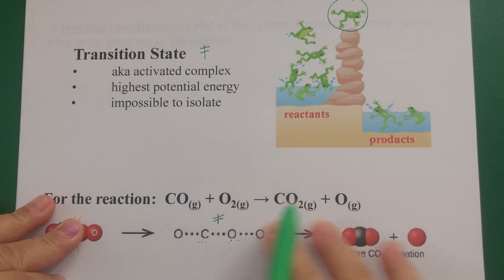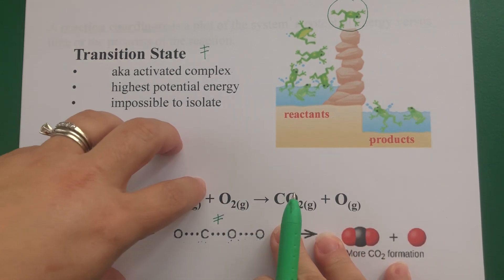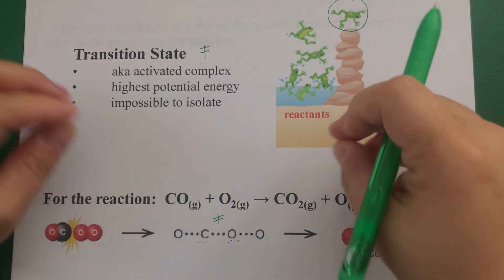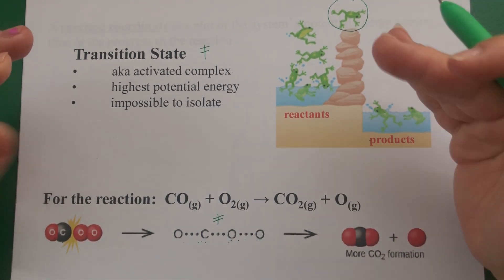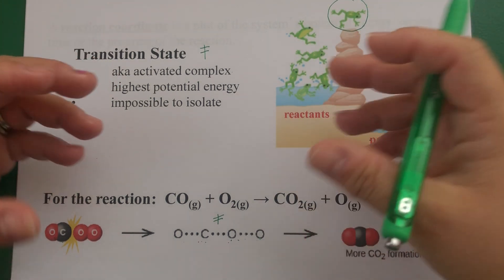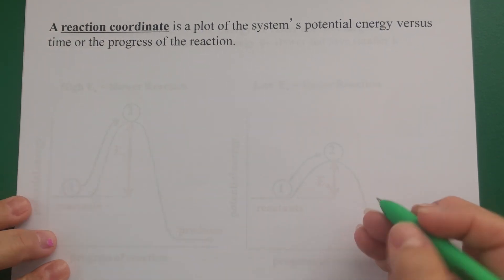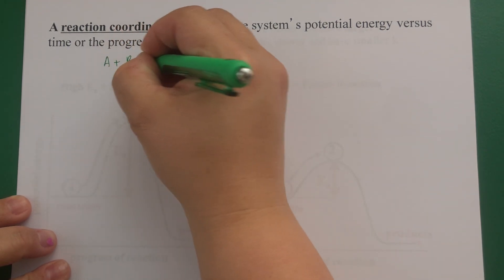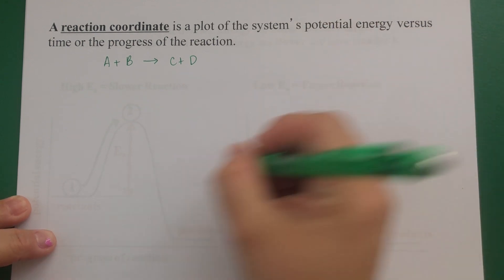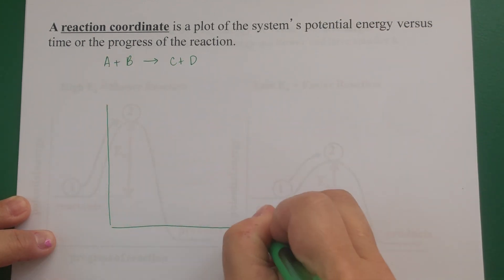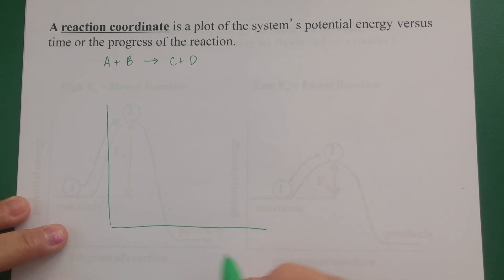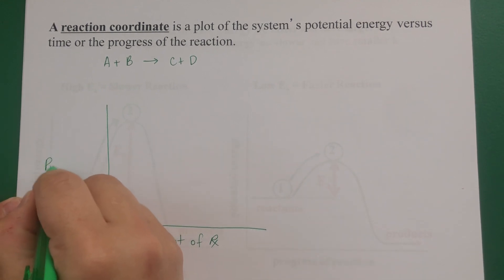To represent the reagents, products, transition state, and energy barrier together, we use reaction coordinates. These describe all the information pertaining to a chemical reaction. For example, if I have a reaction A + B → C + D, a reaction coordinate has potential energy on the y-axis in units of kilojoules, and extent of reaction on the x-axis.